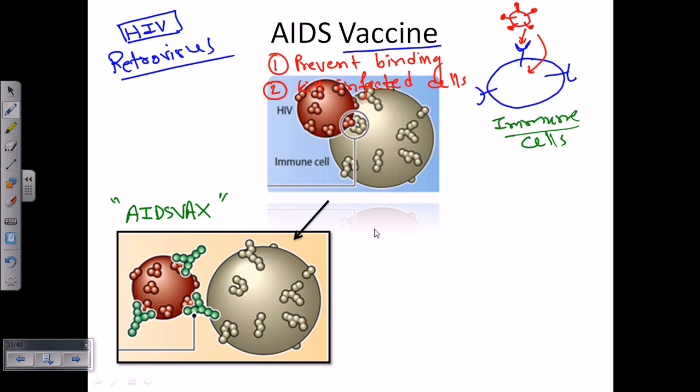Using this AIDS vax vaccine, the actual idea is to prevent the binding of HIV virus with the receptor of our immune system cell. How can you prevent that? We can prevent that by producing antibodies. We can produce Y-shaped antibodies, depicted here in this green color, so these are all antibodies.